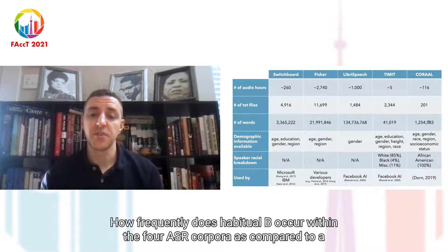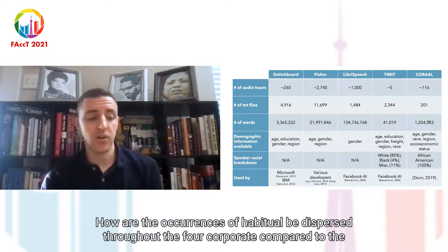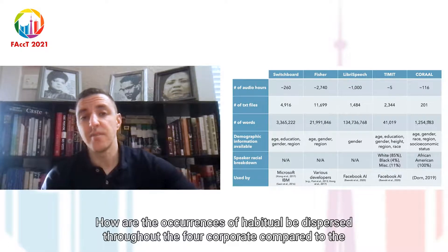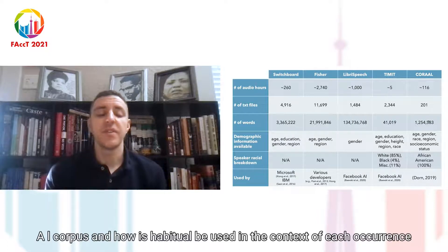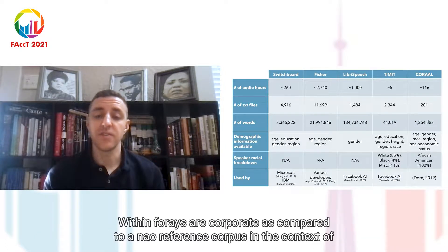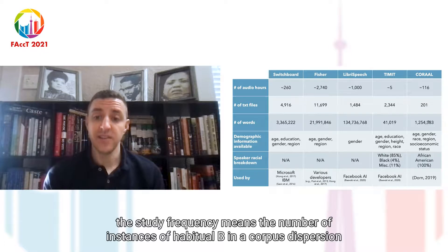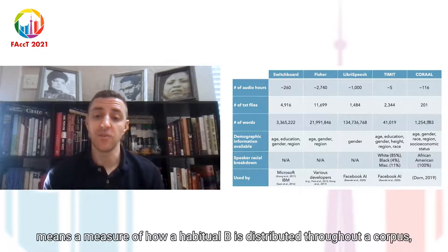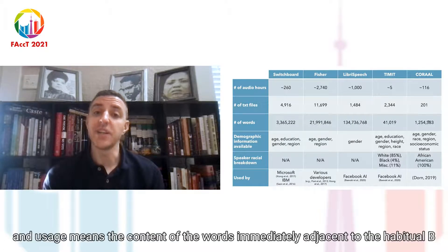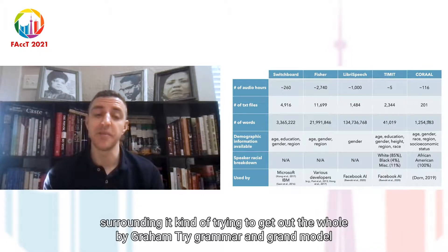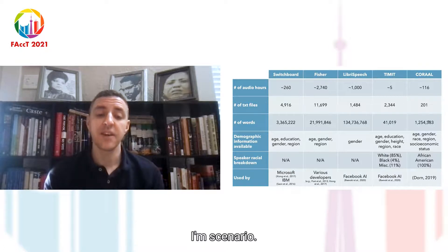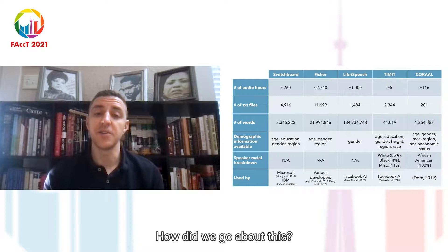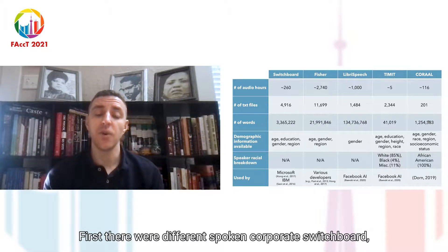You can see the differences between the corpora here. CORAAL is much smaller than most of the other corpora except TIMIT. In terms of demographic information available, many of the corpora do not give racial or ethnic identity — Switchboard, Fisher, and LibriSpeech do not. TIMIT does, and we can see explicitly that 85% of its speakers are white and only 4% are black. That immediately throws up a red flag that there might be bias here already. CORAAL is obviously a corpus of African-American speakers, so it is 100% African-American. At the bottom, you can see the major developers that use these corpora either to develop or evaluate their systems.